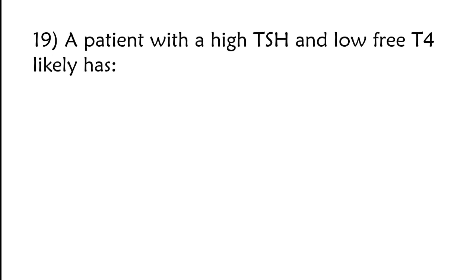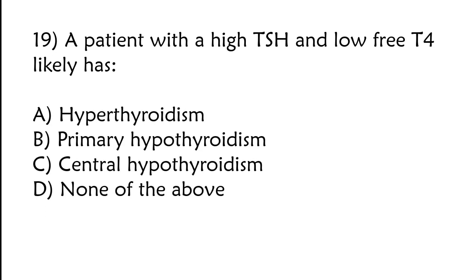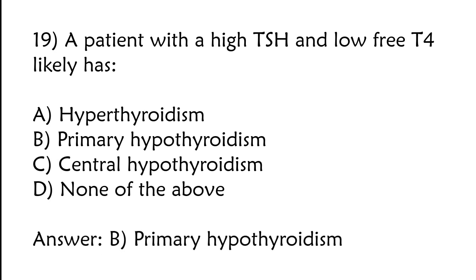A patient with high TSH and low free T4 likely has: A) Hypothyroidism, B) Primary hypothyroidism, C) Central hypothyroidism, D) None of the above. The correct answer is option B: Primary hypothyroidism.